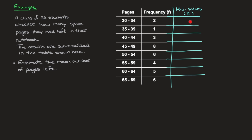For this first cell we want the mid-value between 30 and 34, which is 32. If you ever have trouble finding the mid-value directly, you can calculate it by taking the mean of the lower bound and the upper bound. For the first class of 30 to 34 pages, the mid-value would be (30 + 34) / 2, which equals 64 / 2, which equals 32. Doing the same for each of the groups will quickly lead us to the following values.